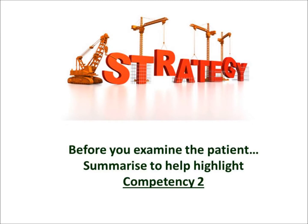Strategically, what you want to be doing is highlighting competency two before you examine this patient, because if you get marked down in competencies one or two, it's going to be very difficult to pass — you become a borderline candidate, as global competencies one and two are the most important. So do a strategic summary: 'Mr. Smith, before I examine you today, the main thing I'm hearing is that you're really concerned about what's causing this headache, given what happened to your friend and the fact that he had a brain tumour. I'm going to readdress this worry — but let me examine you at this point.' Our subsequent podcast will start looking at data gathering to readdress this agenda, then moving on to management aspects.